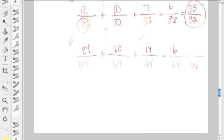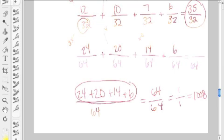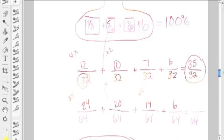64. Now, when we add up all our parts, remember, 64 is our whole. When we add up all these parts, we should get 64 out of 64, which is 1 over 1, which gets us to our 100%. Because all our parts have to add up to 100% and we include all our parts.